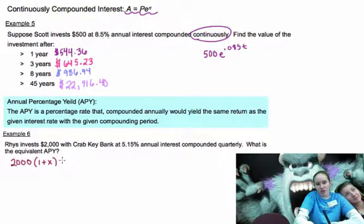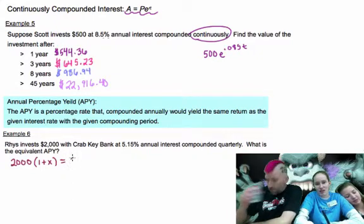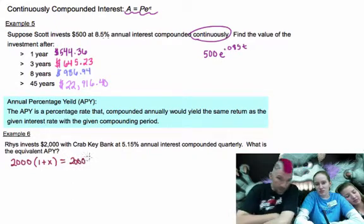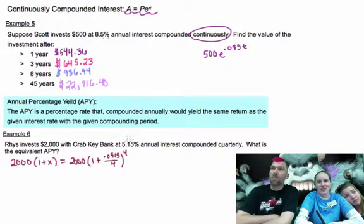So we're going to put 1 plus X in, and then on the right side we have $2,000 times the quantity 1 plus the interest rate compounded quarterly, so over 4. And then our time is we're talking about after one year, so we're just going to have 4 for the exponent. So it's going to be 4 times 1, which is 4. It looks great, it looks awesome. Totally disgusting. Yeah. Okay, epic actually.